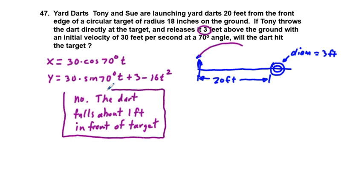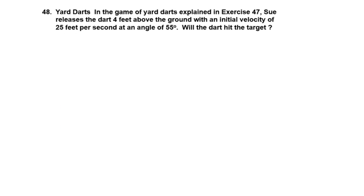When you go to problem 48, it's very much related to problem 47 — it's the same setup but the dart is released 4 feet above the ground at 25 feet per second and an angle of incidence of 55 degrees instead of 70 degrees. Just take the data from problem 47 and make those changes in the equation. This is mainly about understanding how to construct a parametric equation for a trajectory situation and to use the calculator appropriately.